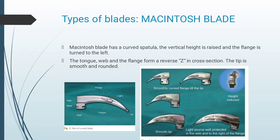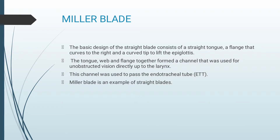To name a few types of blades: the Macintosh blade, which has a curved spatula. The vertical height is raised and the flange is turned to the left. The tongue, web, and flange form a reverse Z in cross section. The tip is smooth and rounded. The Miller blade — the basic design of a straight blade — consists of a straight tongue, a flange that curves to the right, and a curved tip to lift the epiglottis. The tongue, web, and flange form a channel for unobstructed vision directly up to the larynx, and the channel is used to pass the endotracheal tube. The Miller blade is an example of straight blades.